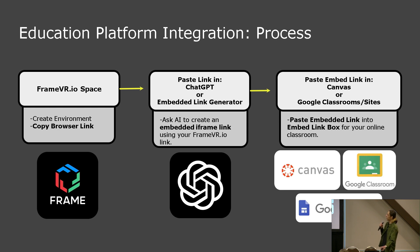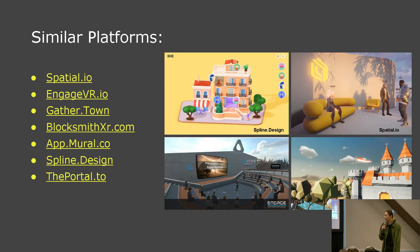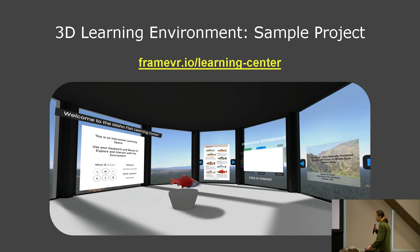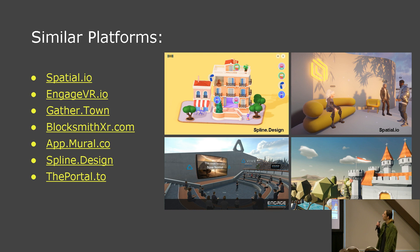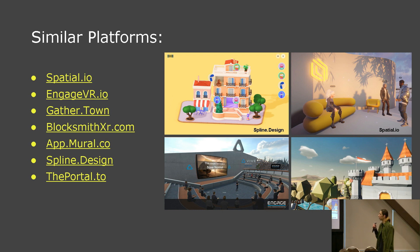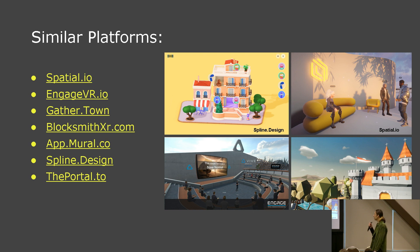Frame will probably pull that API at some point this year and create the embedded link for you directly. There are similar platforms to consider in terms of usability and accessibility. Spatial, Engage, Gather, Blocksmith, Mural, Spline, and Portal are all XR web tools where the internet is the glue that holds them together, and the devices are the outlets for engagement for those platforms.